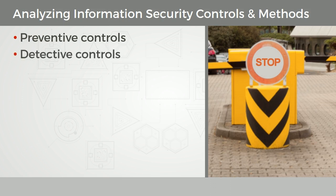A detective control is basically a warning. You're looking for some evidence, an indicator of compromise, an indicator of attack, an attempted violation of your security policy. This would include things like audit trails, logging, intrusion detection systems, both physical, like closed-circuit television, alarm systems, even down to checksums on frames and on transfer of data files.